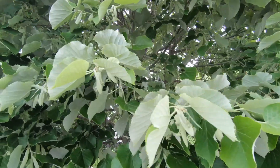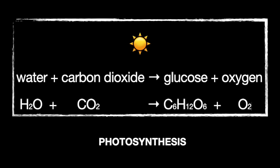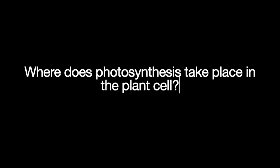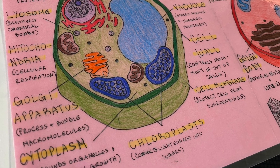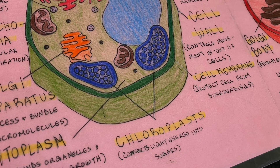Photosynthesis is a process where plants trap energy from the sun during the day and use this energy to change carbon dioxide into glucose and oxygen. The photosynthesis reaction takes place in the chloroplast of a plant cell, where the green light-capturing pigment chlorophyll can be found.